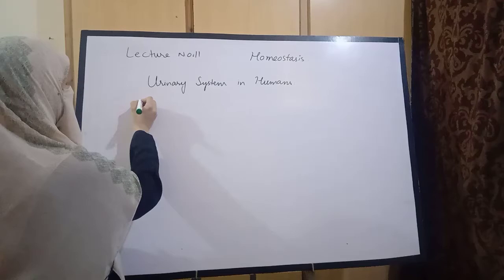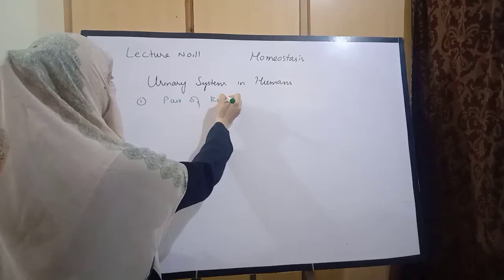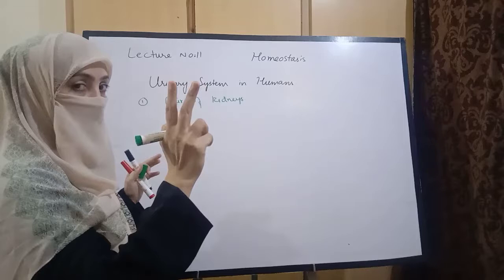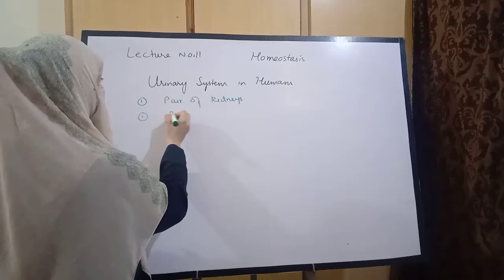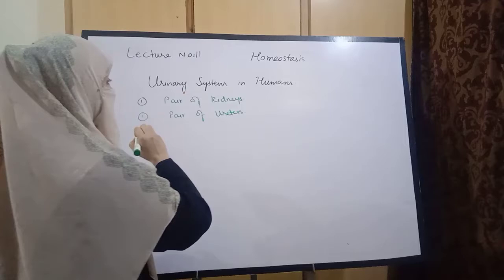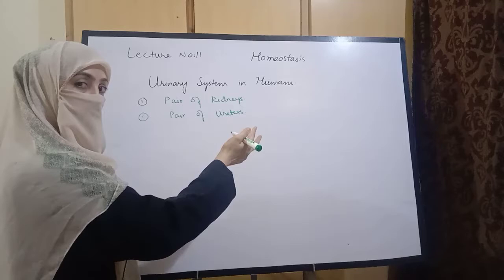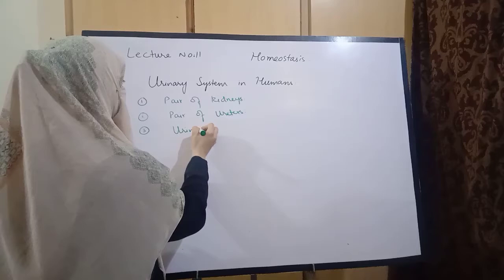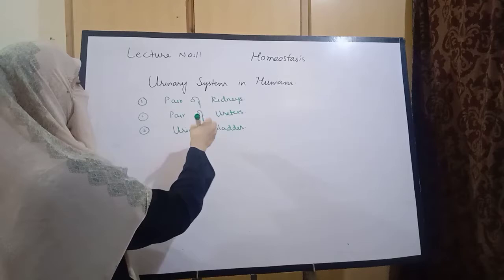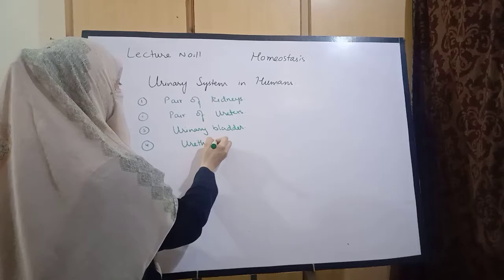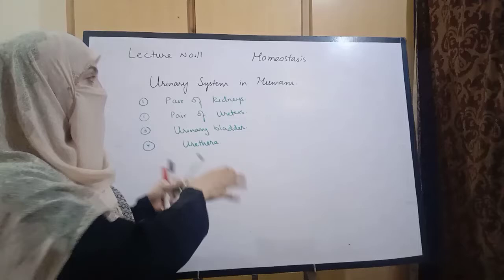सबसे पहले हम humans के urinary system के components देखते हैं। सबसे पहला component है pair of kidneys — दो kidneys। फिर उन kidneys में से निकलने वाला pair of ureters — दो ureters जो tubes हैं और kidney से urine लेके next part की तरफ जाती हैं। वो next component है urinary bladder جिसमें urine कुछ देर store होता है۔ Then urine moves outside the body through a tube called urethra. यह हमارे urinary system के components हیں۔